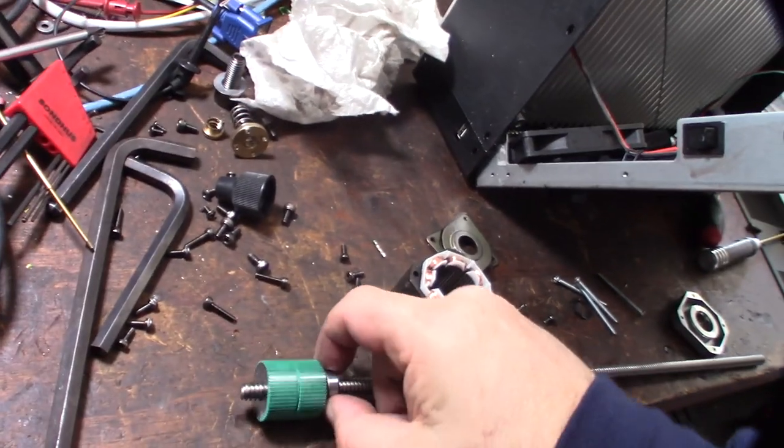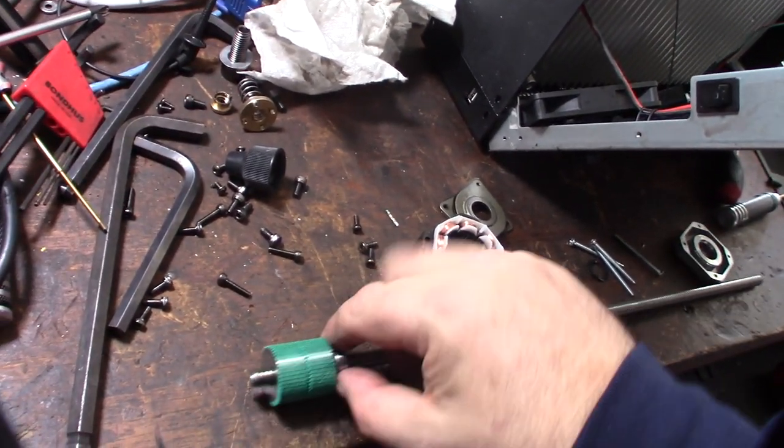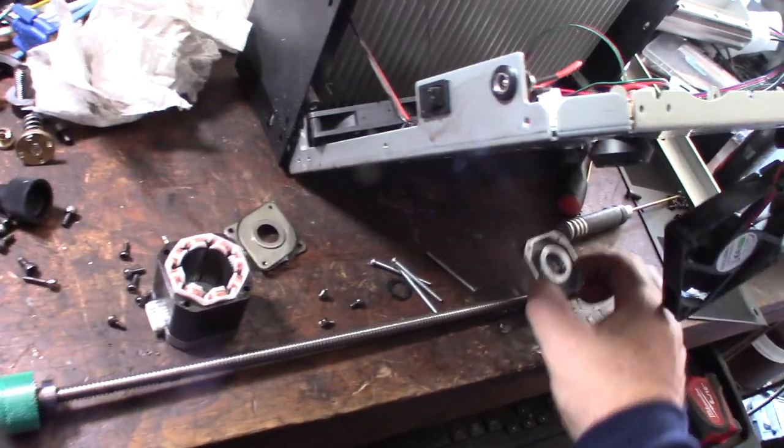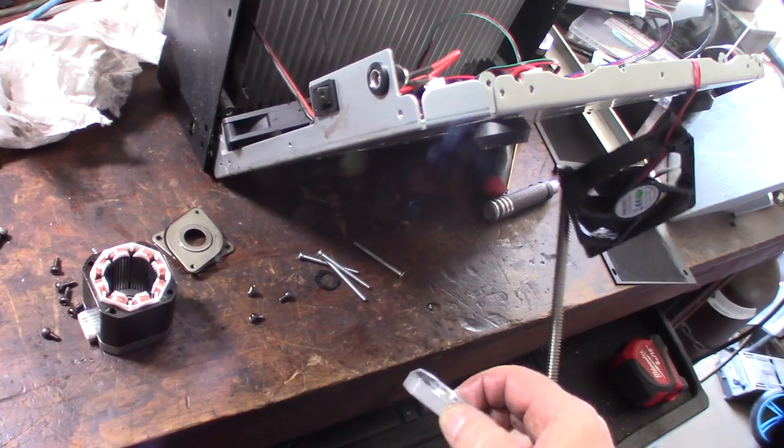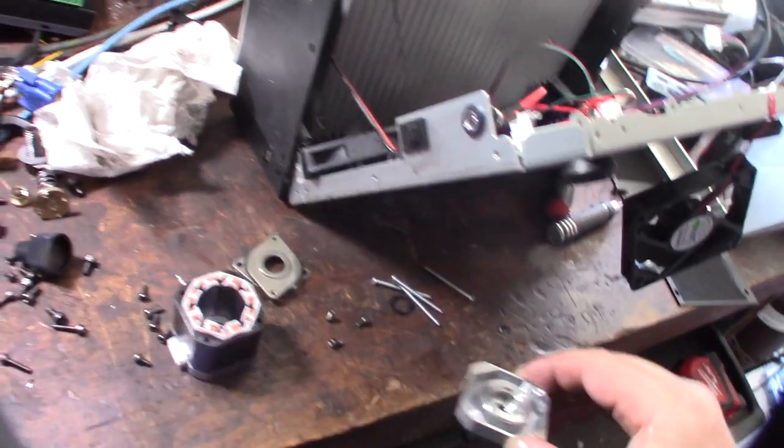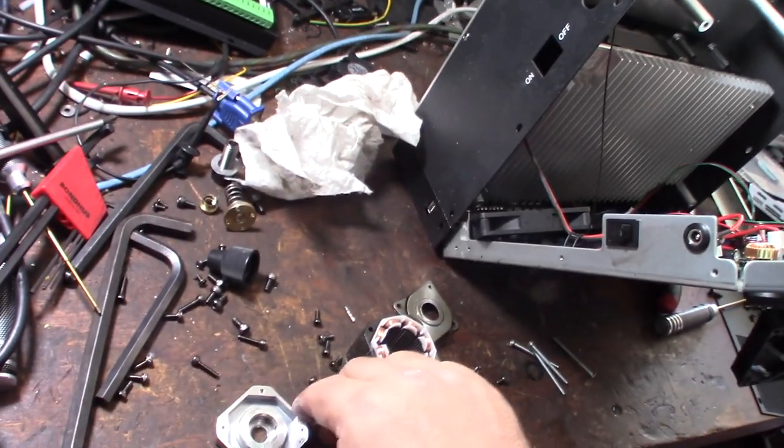All right, so this front bearing is totally locked up. So I don't know if it was spinning inside the case. Yeah, I have a feeling it was spinning maybe inside the case, so instead of the bearing spinning it was actually just spinning inside the aluminum housing.